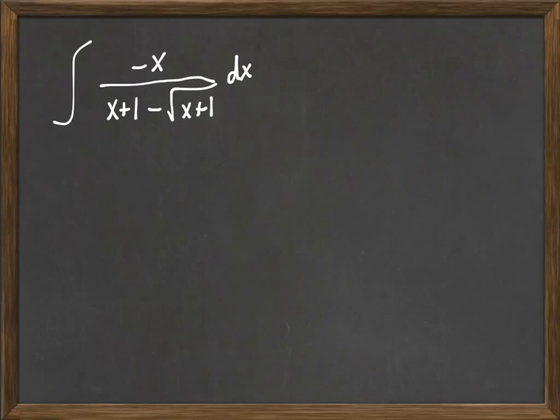A common thing to try would be maybe to let u be x plus 1, and unfortunately that still leaves you with a u minus the square root of u in the bottom, and you're really no further along in doing the problem than you were before.